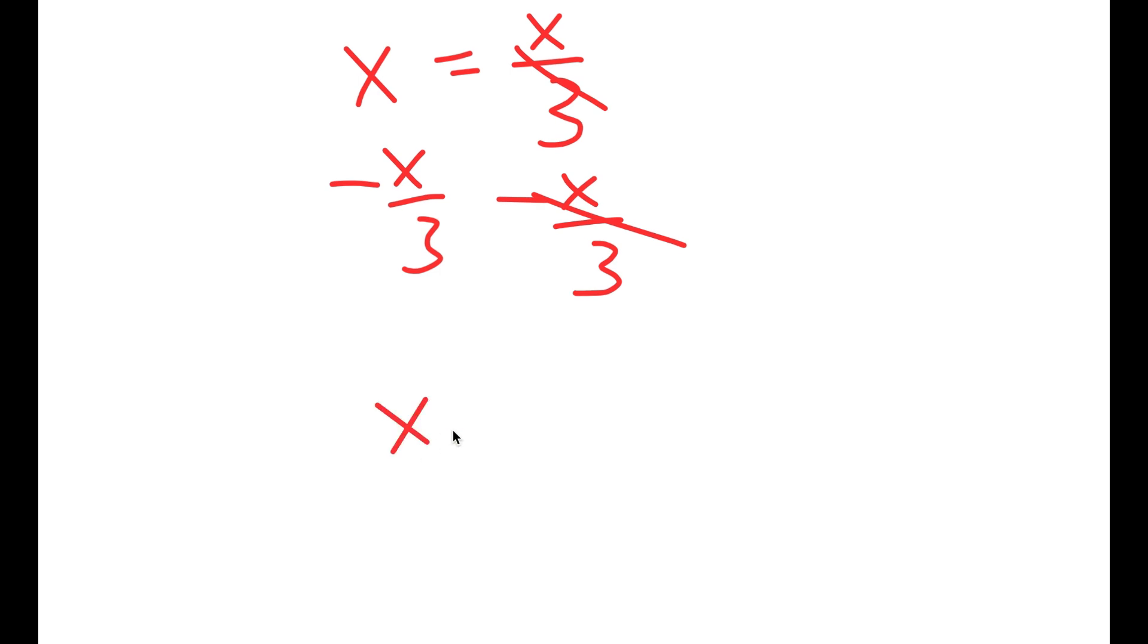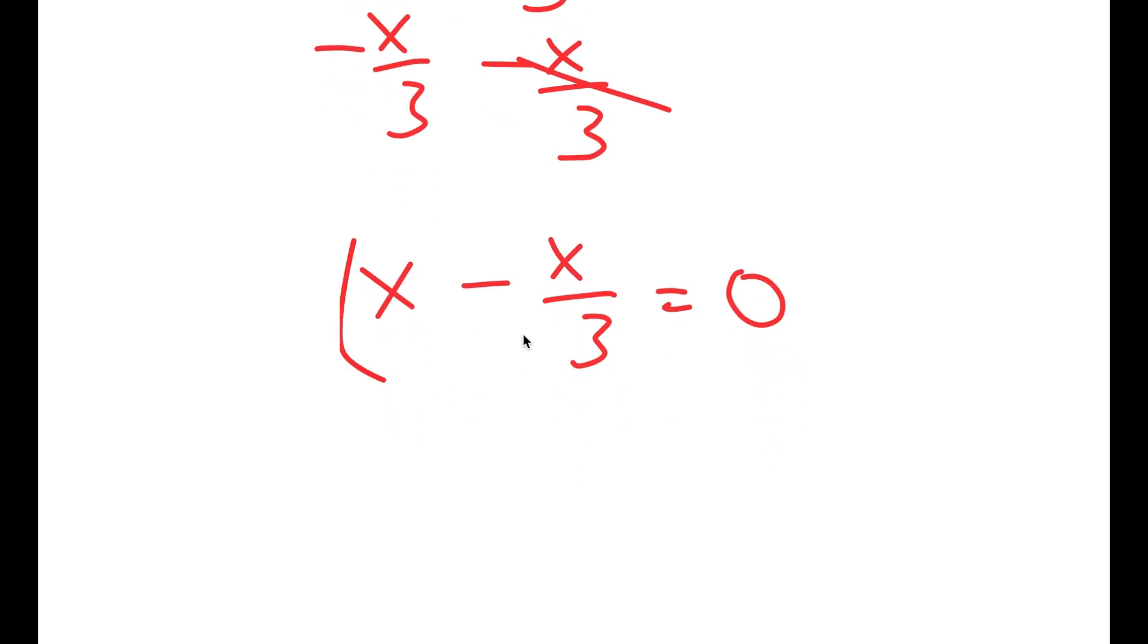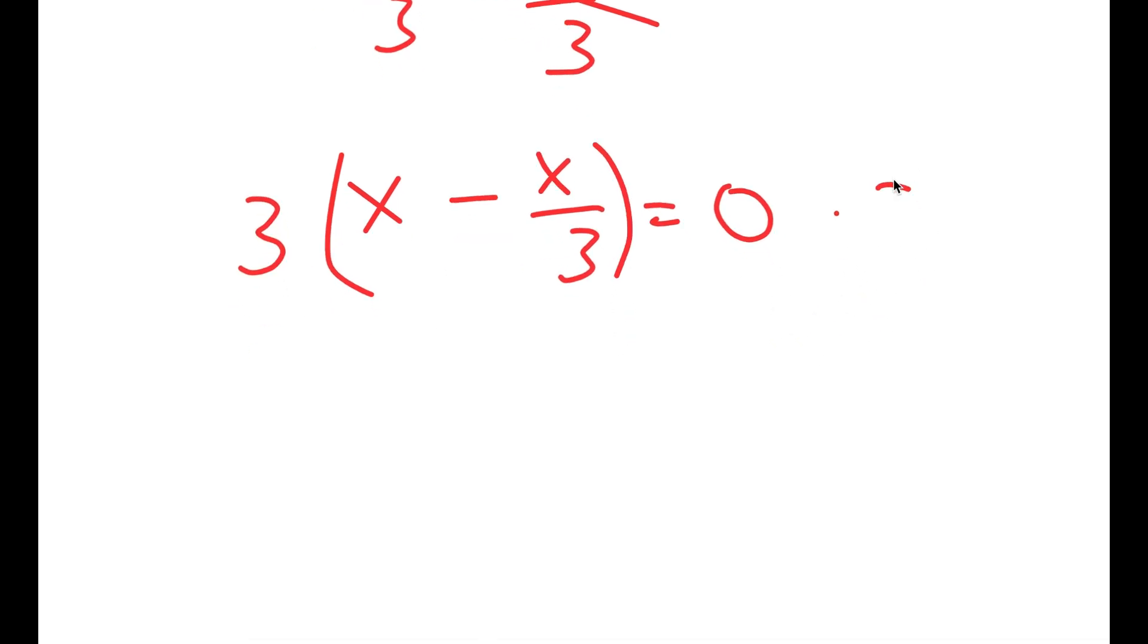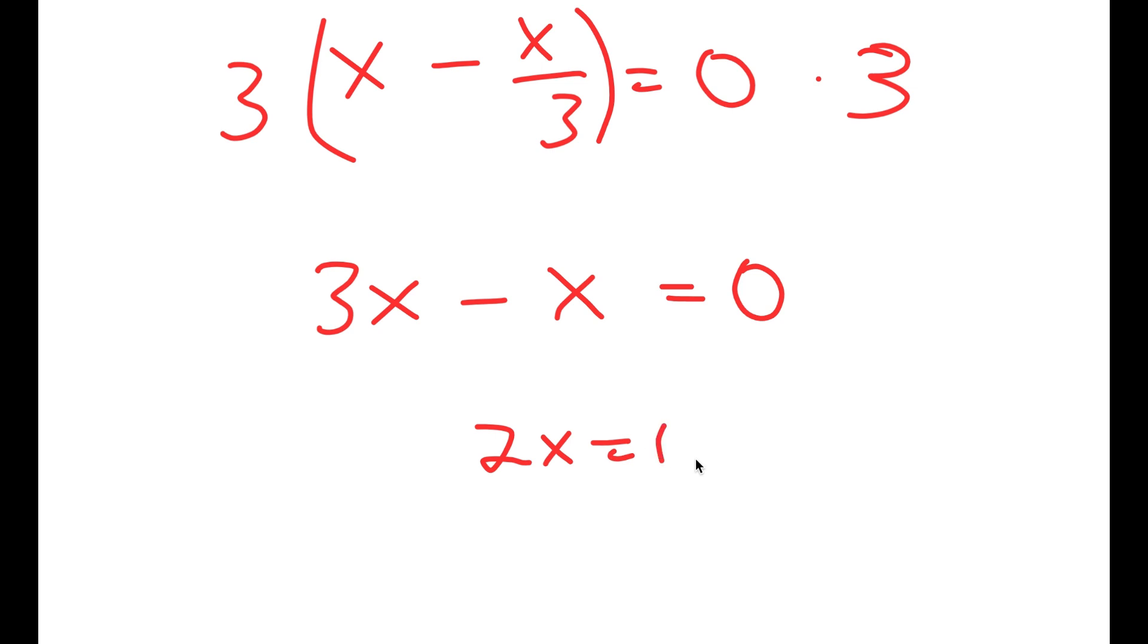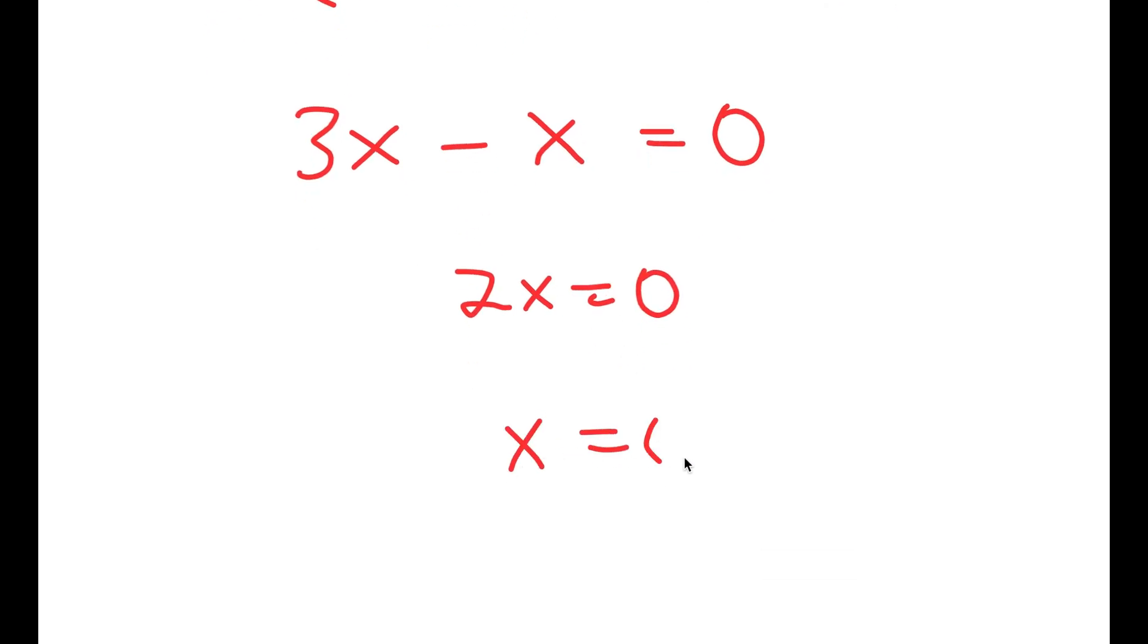So now I get x minus x over 3 is equal to 0, and now I'm going to multiply both sides by 3. So 3 times x is 3x, and 3 times x over 3 is just x, so I get 3x minus x is equal to 0, meaning 2x is equal to 0 and x is equal to 0.